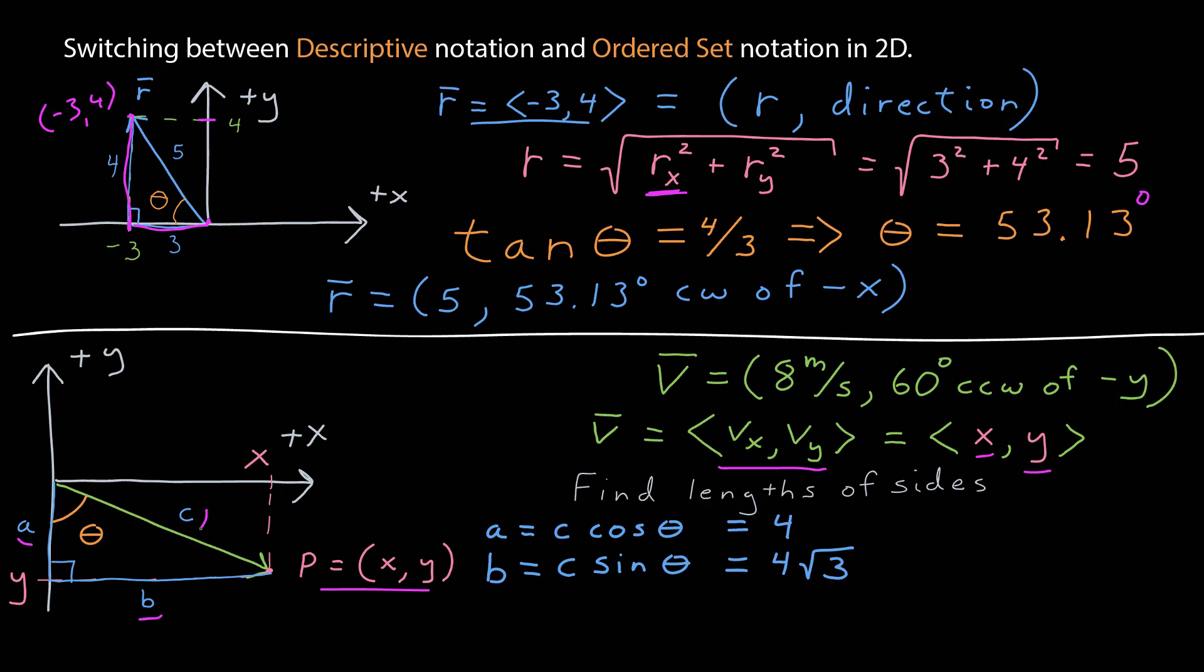So, the length of side b of my triangle is 4 times the square root of 3. From those lengths of the sides of that triangle, I can find the coordinates of that point.